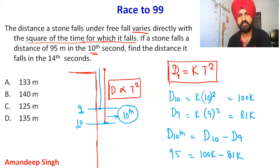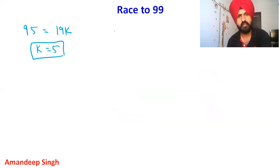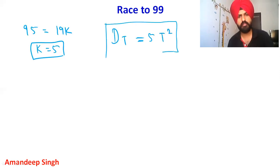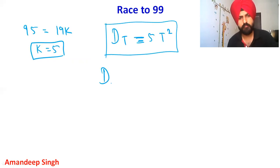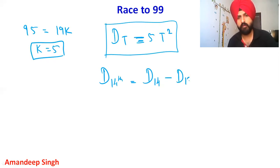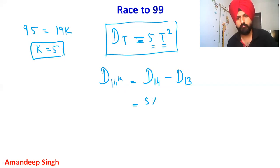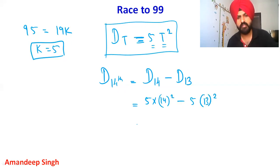Now if k is 5, your formula becomes: distance dropped by a body equals 5 times t squared. The question asks to find the distance it will fall in the 14th second. To find the 14th second distance, we calculate d14 minus d13. So d14 = 5 times 14 squared, and d13 = 5 times 13 squared.